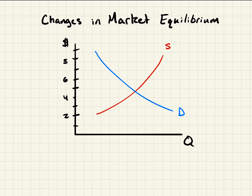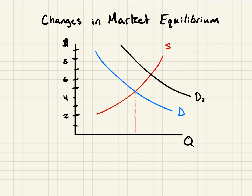Let's say that we have a shift in demand and people's tastes and preferences increase for this good or service. So we're going to have an increase in demand, which means demand is going to now go here to D2. With this market equilibrium, price is going to increase. So we had market equilibrium here, which gave us an equilibrium price at about four and a half dollars and an equilibrium quantity here.